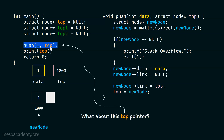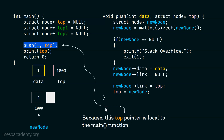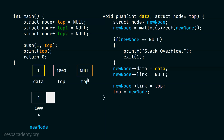But what about the top pointer in main? This top pointer will never receive the address of the new node. This top pointer is local to the push function — after the function finishes execution, it gets destroyed. Think of this as call by value. We are passing the copy of main's top pointer to push's top pointer. Whatever changes we make here in push's top pointer will never get reflected back to main's top pointer. That is why main's top pointer still remains null.